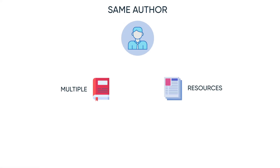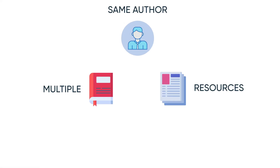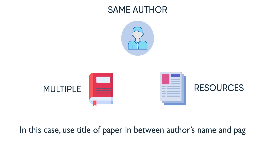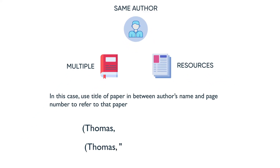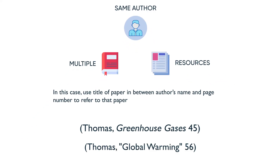Now, if you have the same author with multiple sources, what will you do? In this case, use the title of the paper in between the author's name and page number to refer to that specific paper. Here, the first citation has the title in italics and the second one has it in quotation marks — because the first one is a book and the second one is an article.